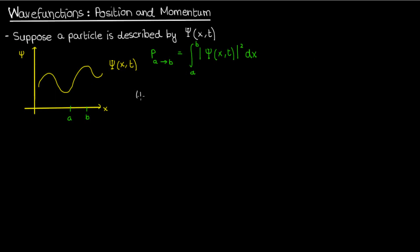Now here's our first definition. The expectation value of the position x of the particle is given by the integral from negative infinity to infinity of x times the magnitude of psi squared dx.